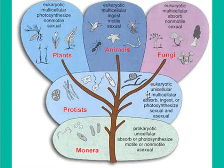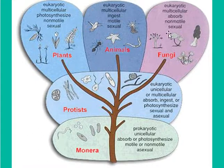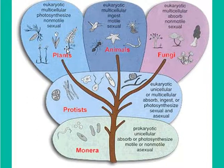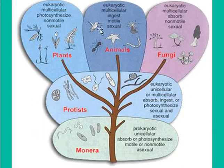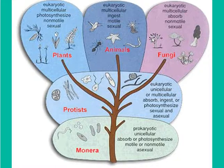Then we get into the bigger stuff: plants, animals, and fungi. You'll learn all about plants in coastal botany, so we're not going into that right now. Fungi and animals are both eukaryotic and multicellular. Neither of these make their own food like plants do through photosynthesis.